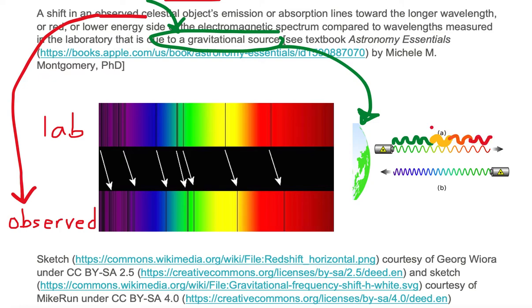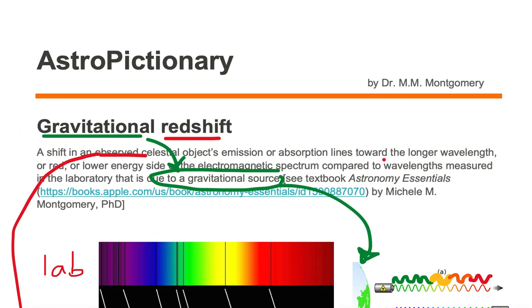Because the source of the shift to red is gravity, this is called a gravitational redshift.